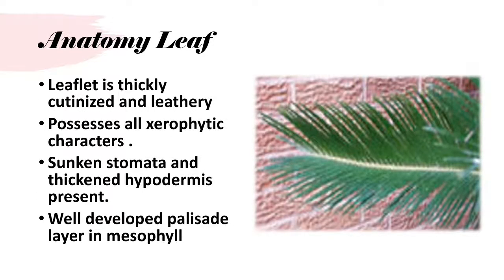Anatomy of leaf: the leaflet is thickly cutinized and leathery. They possess all xerophytic characters, including sunken stomata and a thickened hypodermis. There is a well-developed palisade layer in the mesophyll.